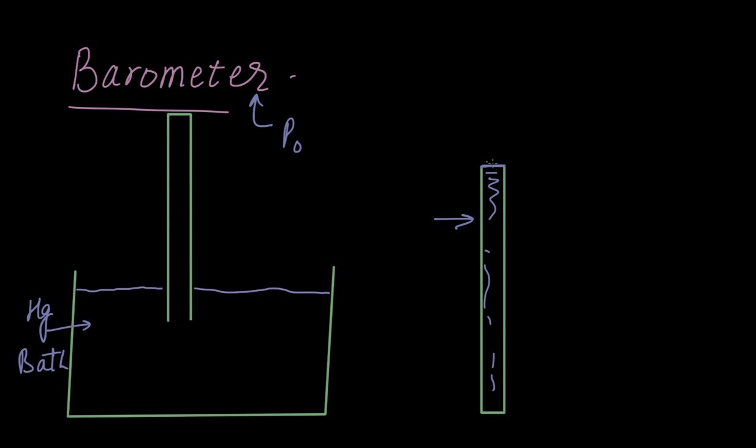And now what we do is we confine this opening with, let's say, a thumb, and then this tube is inverted and put into this mercury bath. So I've drawn this beforehand. This tube is the same tube which has been inverted, and now it's dipping inside this mercury bath.